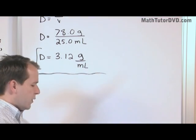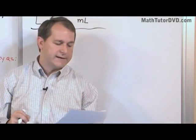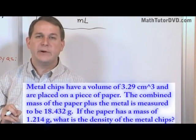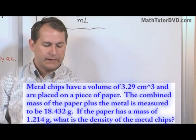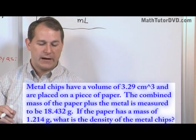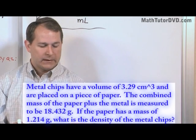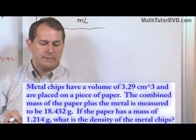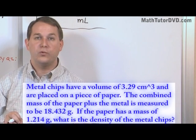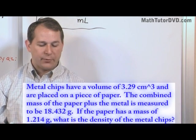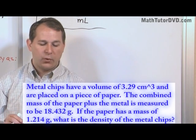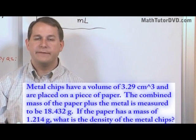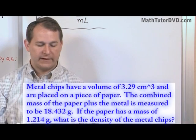Let's go on to a different type of problem — a similar concept. Metal chips have a volume of 3.29 cubic centimeters, and they're placed on a piece of paper and weighed. The combined mass of these two is 18.432 grams. If the paper has a mass of 1.214 grams, what is the density of the metal chips?